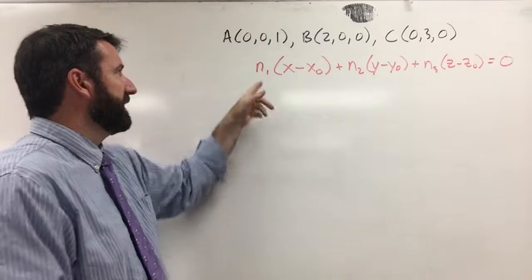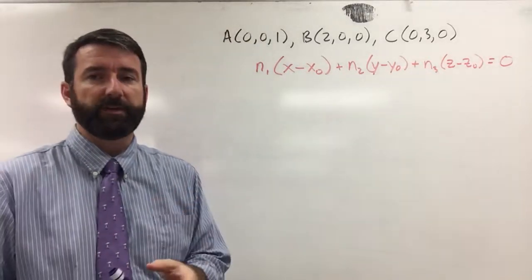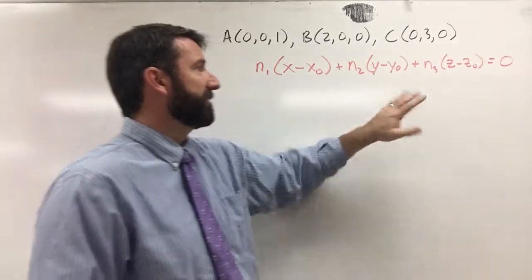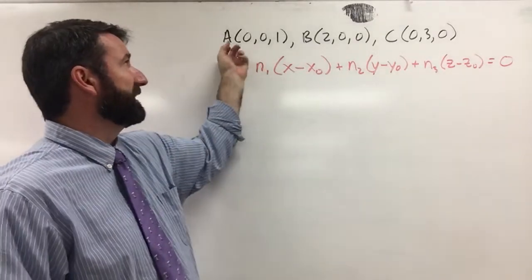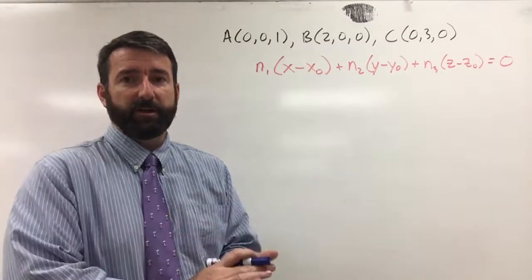In your book they used a, b, and c for those components of the normal vector. I chose to use n1, n2, n3 in this example because we've already used a, b, and c as the names of our points.